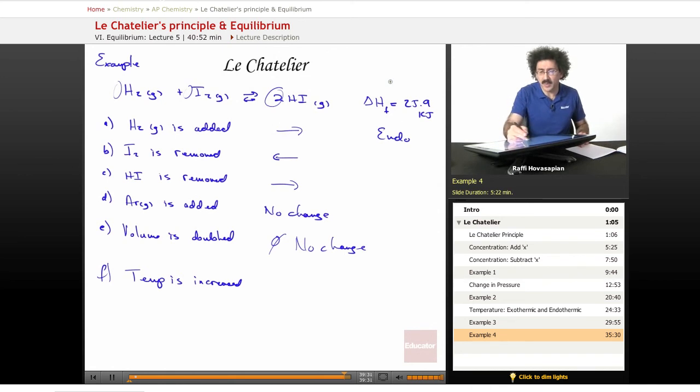Because we need to know what the delta H is in order to decide what happens when we make a change to temperature. So if this is endothermic, that means that heat is one of the reactants. It is one of the things required to actually move the reaction.